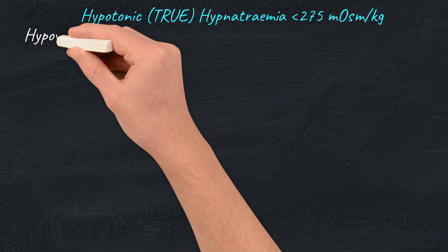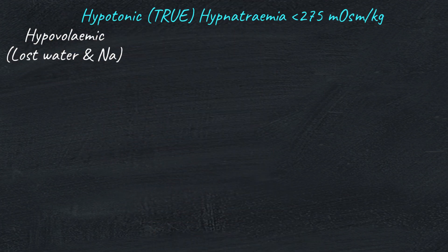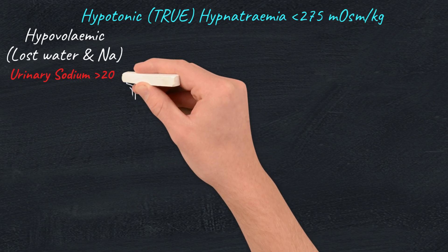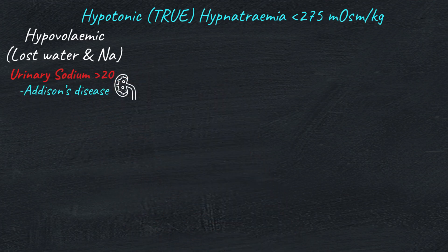If your patient is dry — hypovolemic — it means they've lost both water and sodium. We look at the urine sodium levels to see whether the loss is from the kidney or not, because sodium follows water. If urinary sodium is more than 20, then it's renal loss of sodium. One cause is Addison's disease. Remember, mineralocorticoids keep sodium in and push potassium out, so in Addison's — a lack of mineralocorticoids — sodium is excreted from the kidneys and potassium is retained, resulting in hyponatremia and hyperkalemia. This is why hyponatremia workup plans include a morning cortisol level. Another cause is high-dose diuretics, causing all the sodium to be lost in urine.